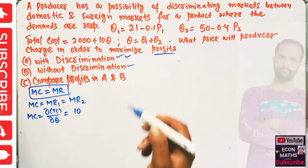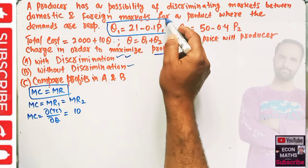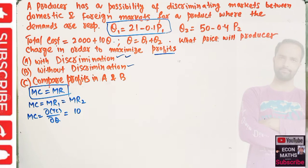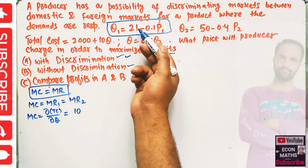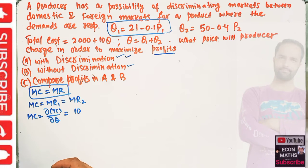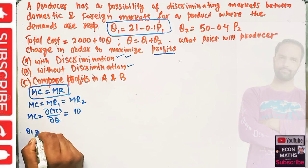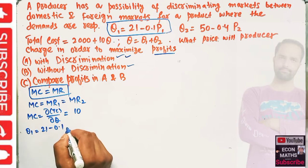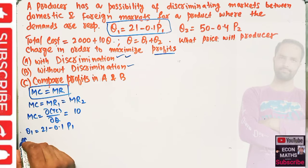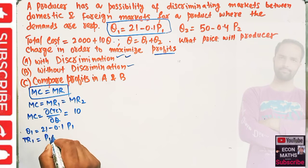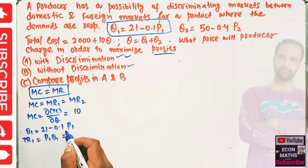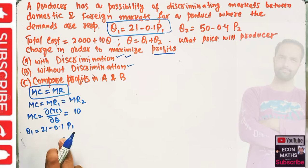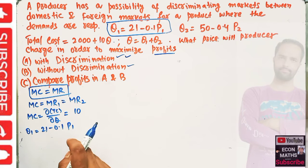In the domestic market, we equate marginal revenue in the first market with the marginal cost. To find marginal revenue in the first market, we start with Q1 = 21 - 0.1P1. Total revenue in the first market is P1 × Q1. We first solve for P1.